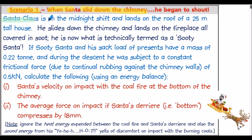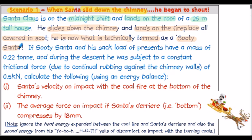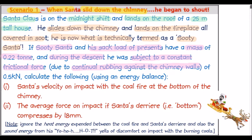Santa Claus is on the midnight shift and he lands on the roof of a 25 metres tall house. He slides down the chimney and lands on the fireplace, all covered in soot — he is now what is technically termed a Sooty Santa. His Sooty Santa and his sack load of presents have a mass of 0.22 tonnes, and during the descent Santa was subjected to a constant frictional force due to continually rubbing against the chimney walls of 0.5 kilonewtons.